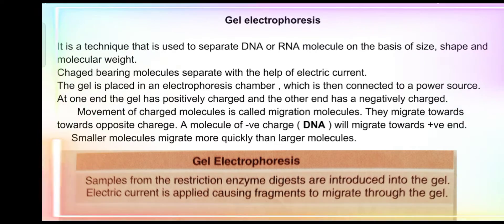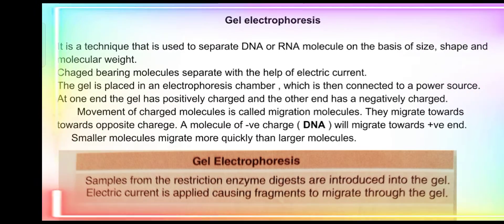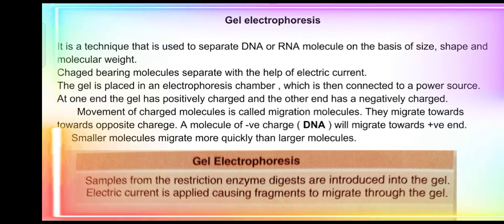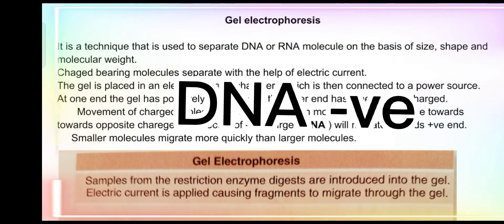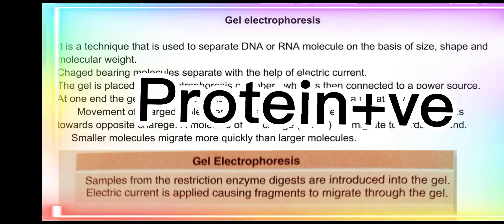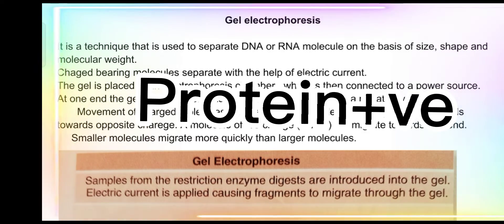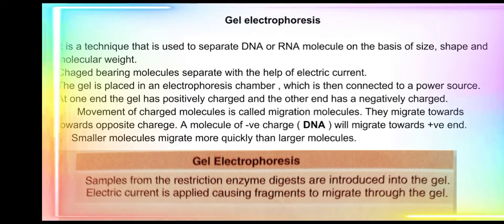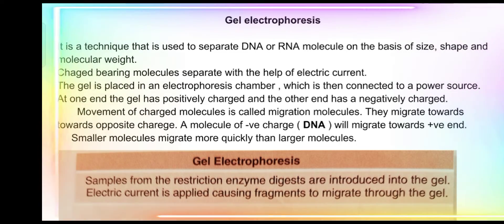This technique is used to separate DNA or RNA molecules. DNA پر جو charge ہوتی ہے وہ negative charge ہوتی ہے۔ DNA میں جو histone protein ہوتی ہے، اس histone protein پر جو charge ہوتی ہے وہ positive ہوتی ہے۔ So we know that DNA has a negative charge and protein has a positive charge.